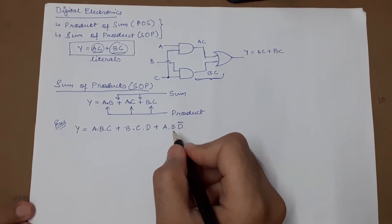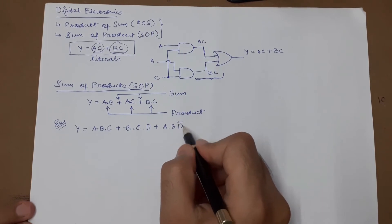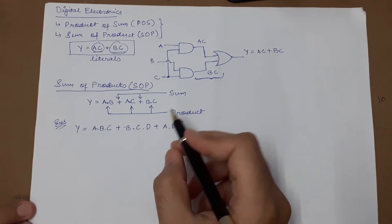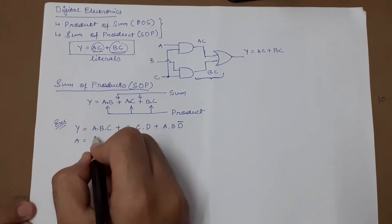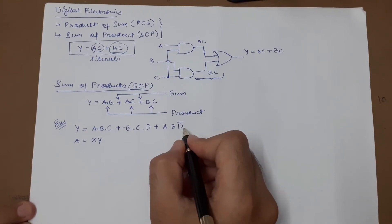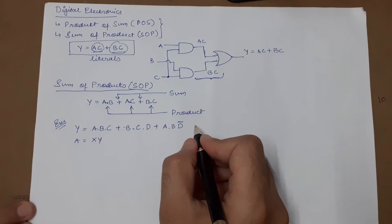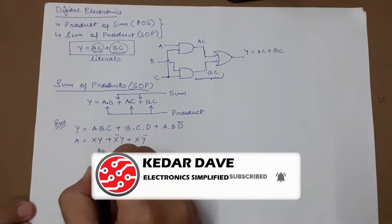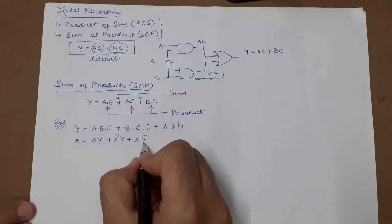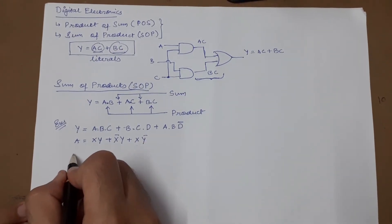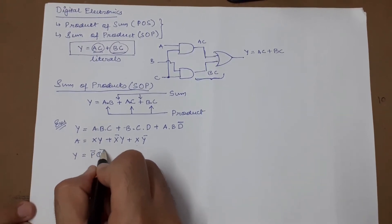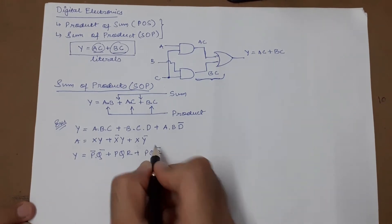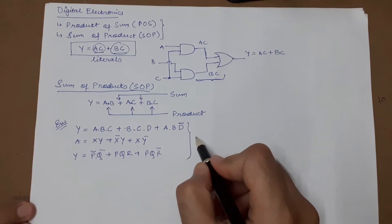D-bar means the complement of D — it can be either 0 or 1 depending on what we are taking. A second example is A equals XY plus X̄Y plus XȲ. A third example is P̄Q̄ dot PQ plus R plus PQR̄. These are all valid expressions in SOP form.